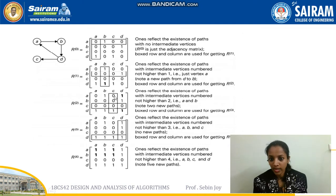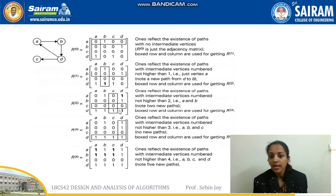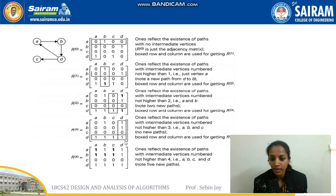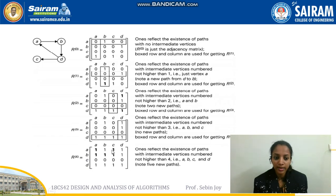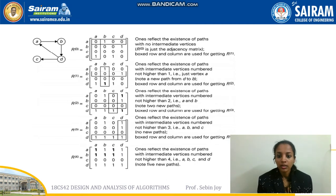For R^2, we write the third row and third column — only one value, so nothing changes. Next, for R^3, we use the fourth row and fourth column where many combinations exist. After solving all these combinations, we get all the updated values. Finally, for R^4, the resulting matrix is the transitive closure of this graph.